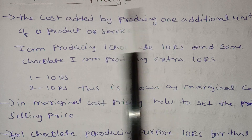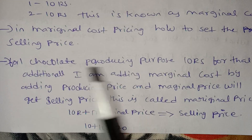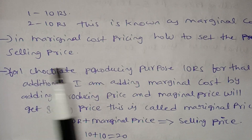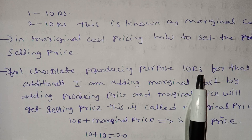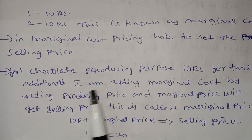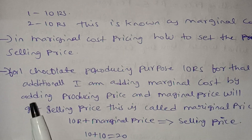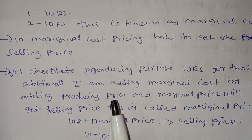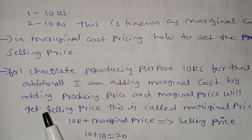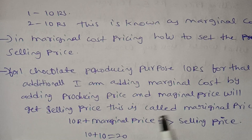In marginal cost pricing, the selling price is set by taking the producing price and adding the marginal cost. Producing price plus marginal cost gives you the selling price — this is called marginal cost pricing.